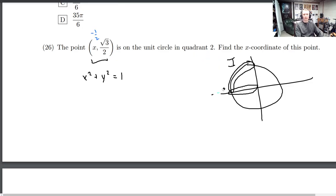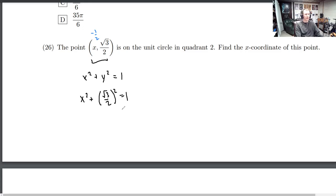So let's just solve this over here for x, and we'll keep the negative root. So square root of 3 squared is 3. 2 squared is 4. That equals 1. Subtract 3 fourths over.